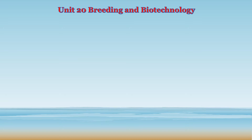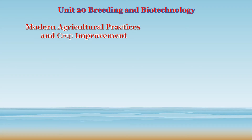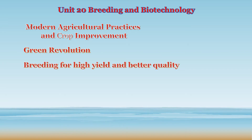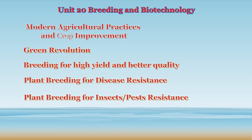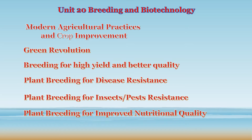In this unit, some topics we will see in this video in detail. First: Modern Agricultural Practice and Crop Improvement; Green Revolution; Breeding for High Yield and Better Quality; Plant Breeding for Disease Resistance; Plant Breeding for Insect Pest Resistance; and Plant Breeding for Improved Nutritional Quality. These topics we will see in detail one by one in this video.